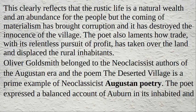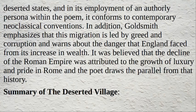The poet also laments how trade, with its relentless pursuit of profit, has taken over the land and displaced the rural inhabitants. Oliver Goldsmith belonged to the neoclassicist authors of the Augustan era, and The Deserted Village is a prime example of neoclassicist Augustan poetry. The poet expressed a balanced account of Auburn in its inhabited and deserted states, confirming to contemporary neoclassical conventions. Goldsmith emphasizes that this migration is led by greed and corruption and warns about the danger England faced from its increase in wealth, drawing a parallel to the decline of the Roman Empire, attributed to the growth of luxury and pride in Rome.